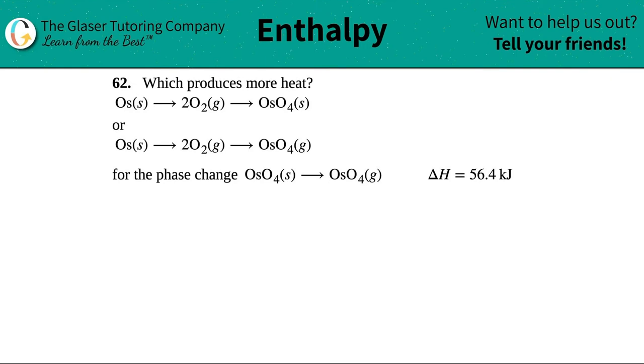Number 62, which produces more heat? We have two different types of flow equations here. We're both starting off with osmium solid, and it's going to get turned into 2O2 gases, and then from there I can get the OsO4.